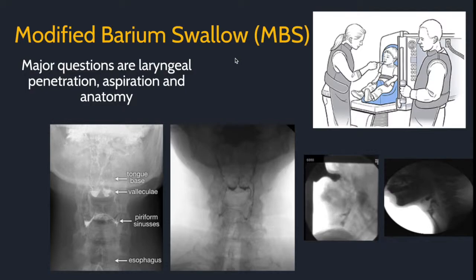Modified barium swallows are a main part of the pediatric rotation. You operate the fluoroscopy machinery while the speech pathologist performs the test. The main questions are: was there laryngeal penetration, frank aspiration, or any abnormal anatomy? When performing the study, it is important to collimate as much as possible and avoid the orbits in particular.